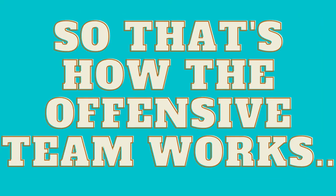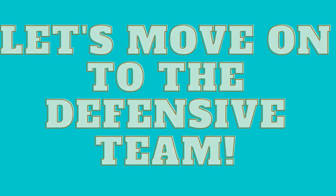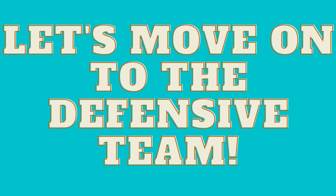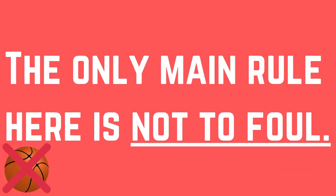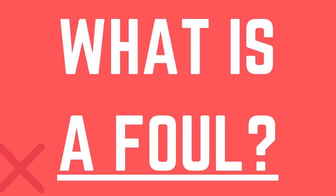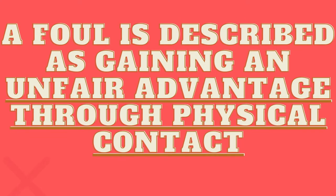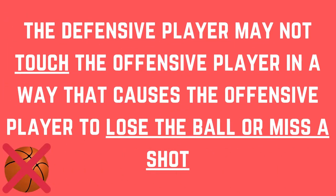That's how the offensive team works. Now let's move on to the defensive team. The only main rule here is not to foul. So what is a foul? A foul is described as gaining an unfair advantage through physical contact. In general, the defensive player may not touch the offensive player in a way that causes the offensive player to lose the ball or miss a shot.